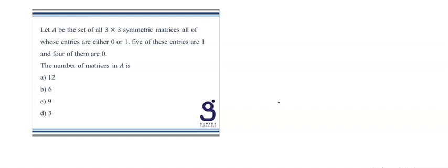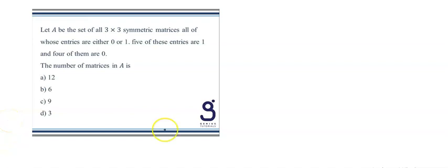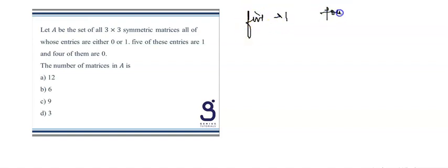Let's start with the first part. It is given that A is the set of all 3×3 symmetric matrices, all of whose entries are either 0 or 1, where five of these entries are 1 and four of them are 0. We have to find how many such matrices are possible.